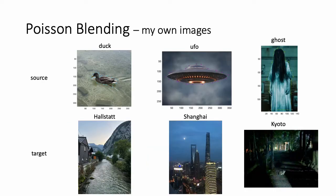I prepared my own images to observe various results of Poisson blending. There are three source images: dog, UFO, and ghost. And there are three target images which I took on my trips: Harstad, Shanghai, and Kyoto.